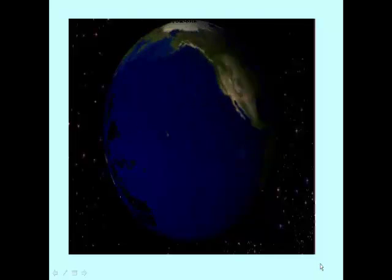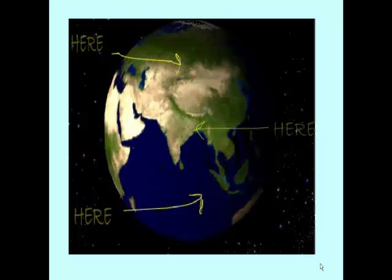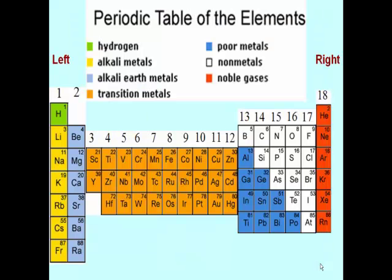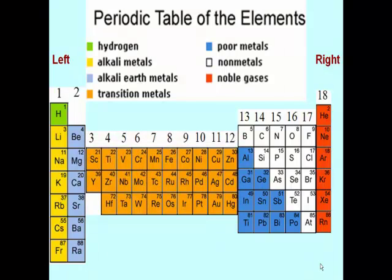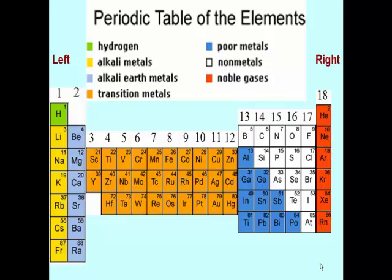Transition metals can be found almost everywhere. In this simplified version of the periodic table, they are highlighted in orange. They are located between group 2 and 13.